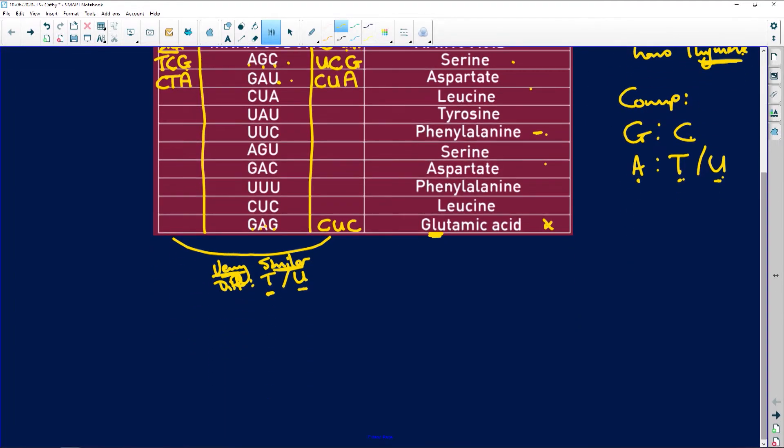Then it says a section of messenger RNA has the following base sequence and is read from left to right. So here's our base sequence: GAUCUC GACAGC AUGACC.